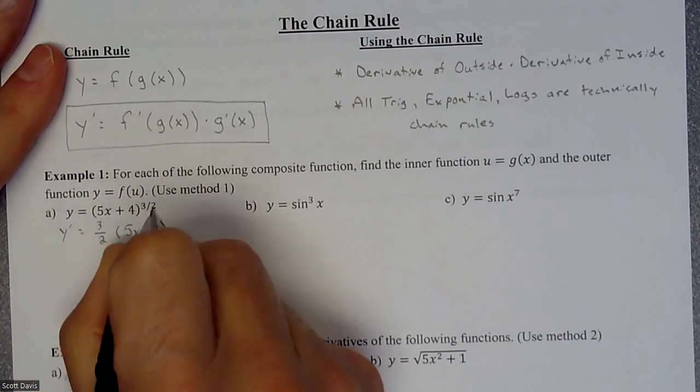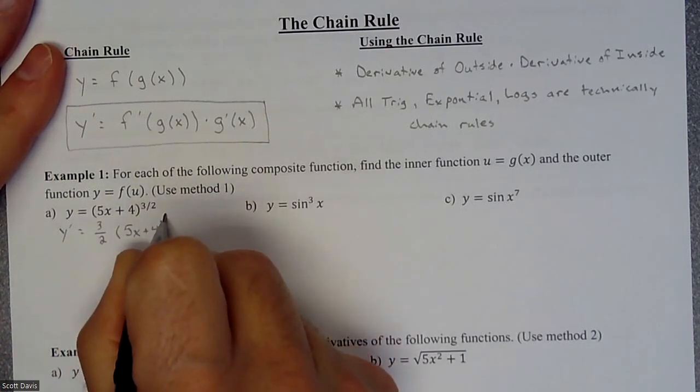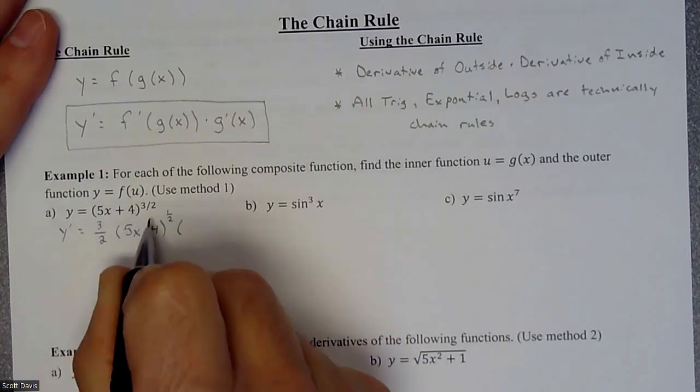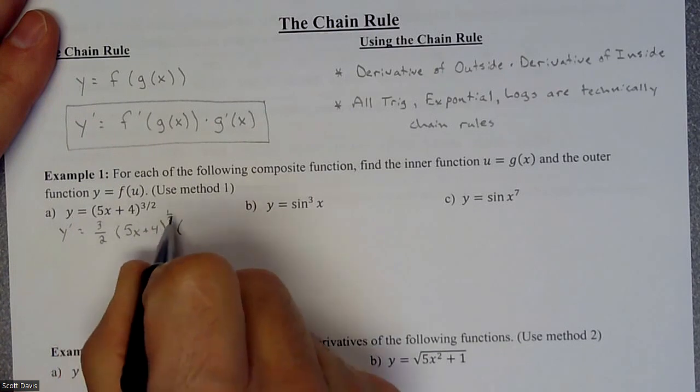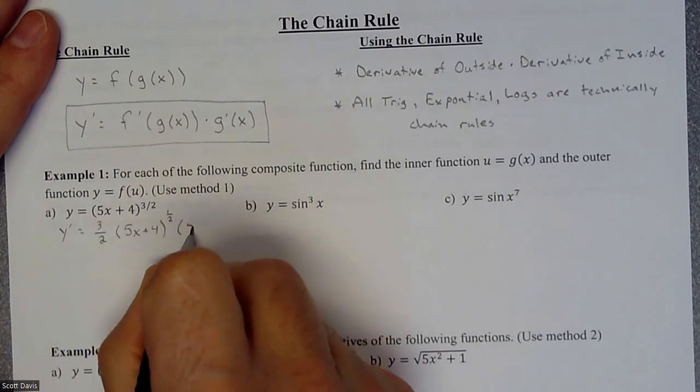So we brought the power down and we're subtracting a power. So three halves minus one is one half. And then times the derivative of the inside. So this is the derivative of the outside not changing the inside and times five.